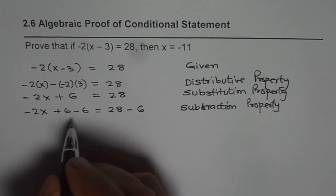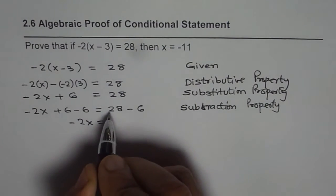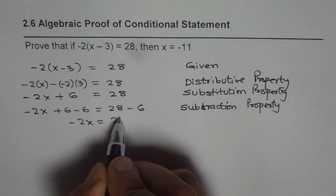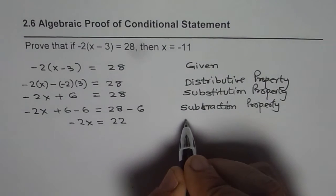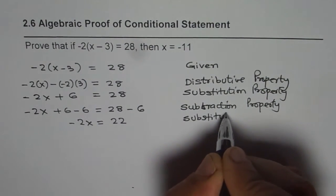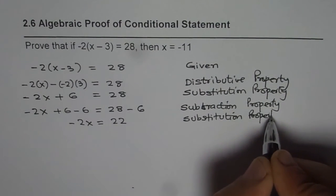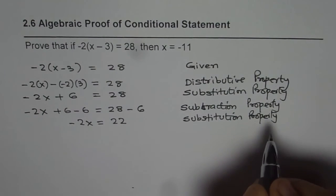That results in -2x = 22, since 28 - 6 = 22. And this is substitution property of equality.